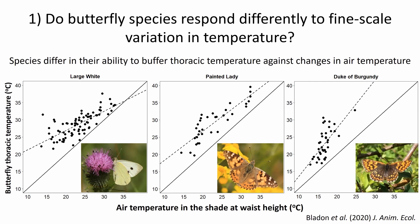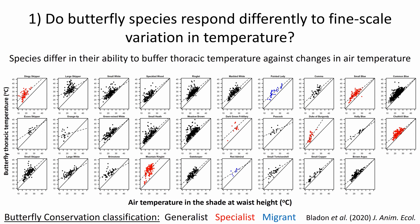Just to give you an overview — the details of this slide don't matter but this shows the same figures produced for all 29 species that we were able to monitor. You can see the range of slopes in the dotted lines — the brimstone has a relatively flat slope and the mountain ringlet next to it has a steeper slope — just to give you a sense of the range of responses across species.